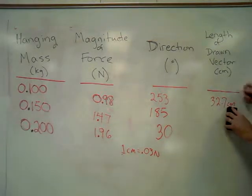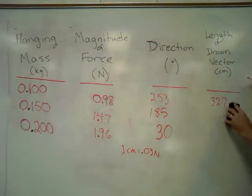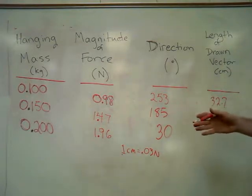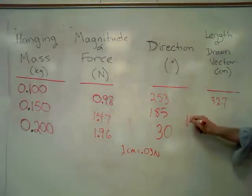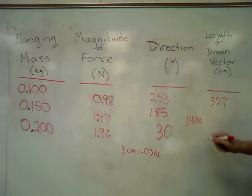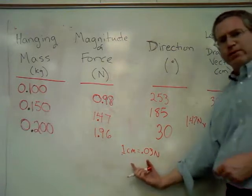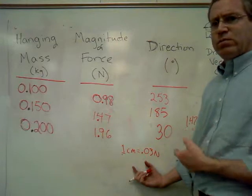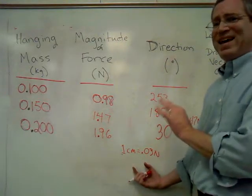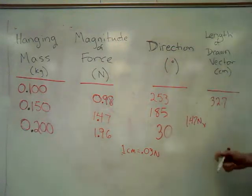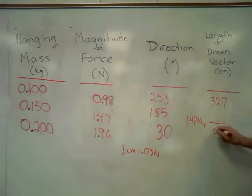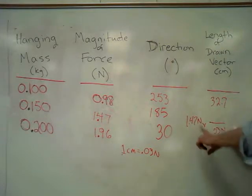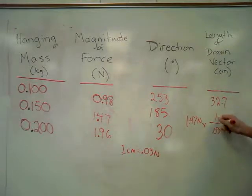I'm going to show you one other technique to get the exact same answer. For the next one, I'm going to do a different technique of figuring this out. I'm going to do the unit conversion aspect of it. So, I take 1.47 newtons, that's what I want to convert to centimeters, and I multiply by my scale factor. I want to get rid of newtons, so I multiply by 0.03 newtons on the bottom, because I want the same unit on top and bottom so they cancel out. And then, one centimeter.